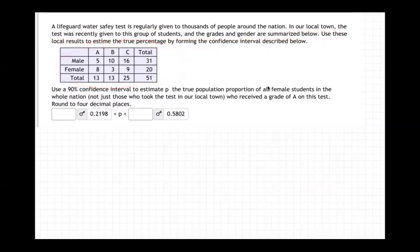So there's the chart on how people did at the lifeguard training in our city. Among the males, five got A's, ten got B's, sixteen got C's. Among the females, eight got A's, three got B's, nine got C's.